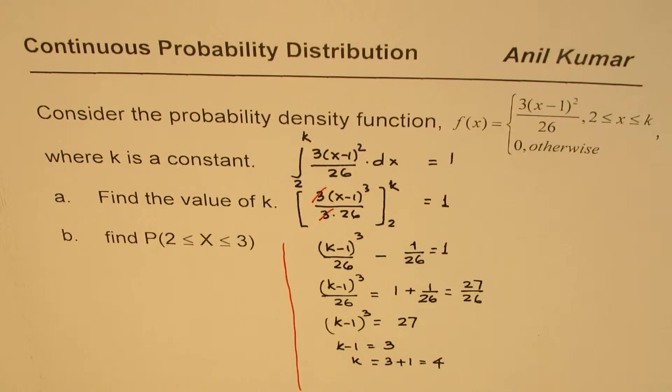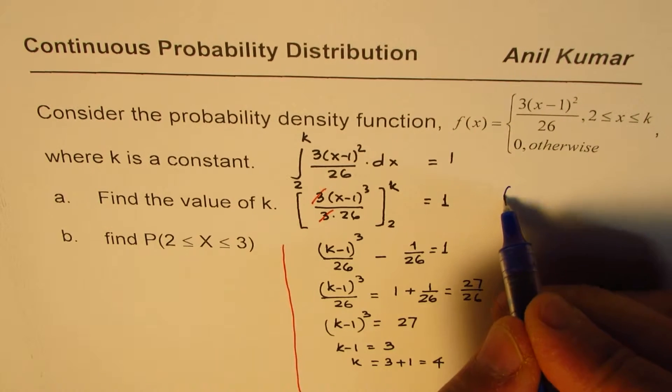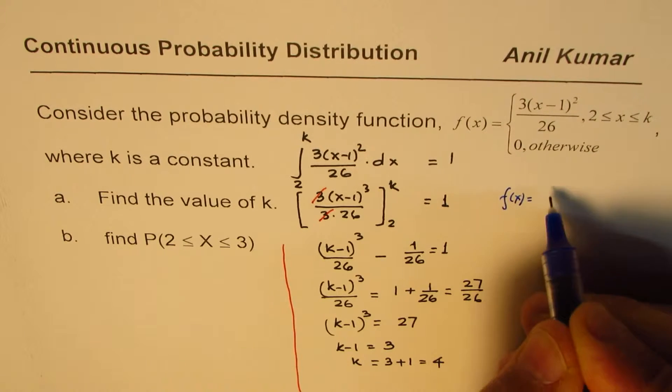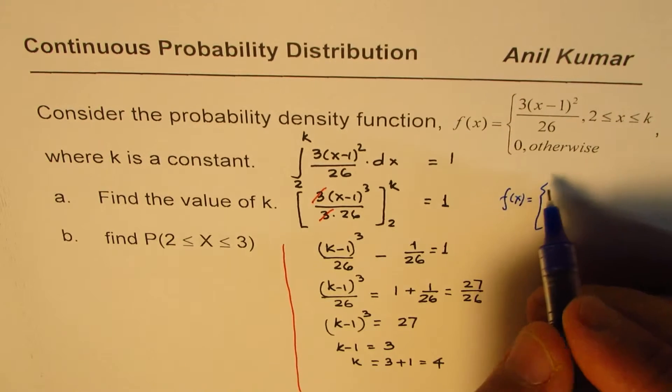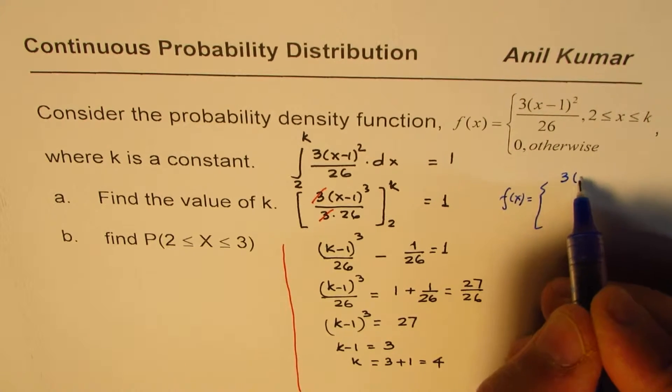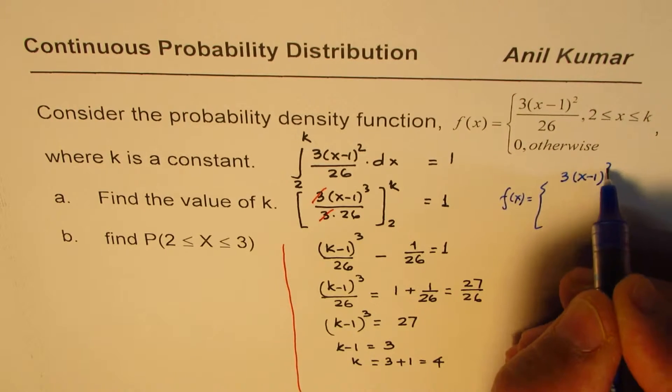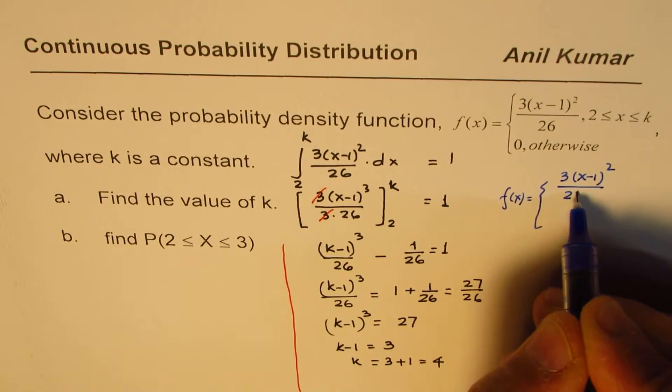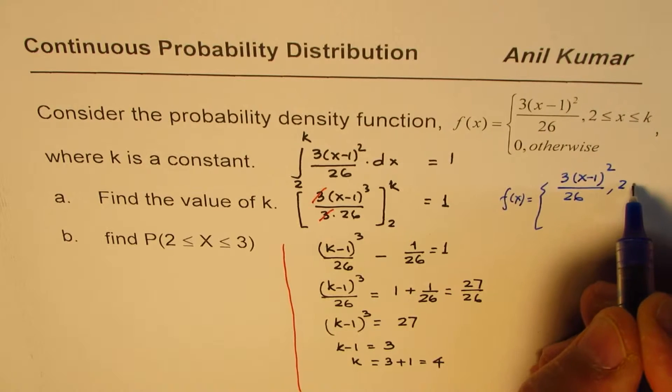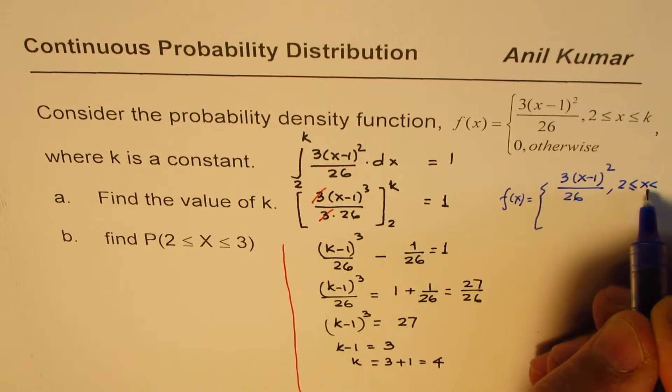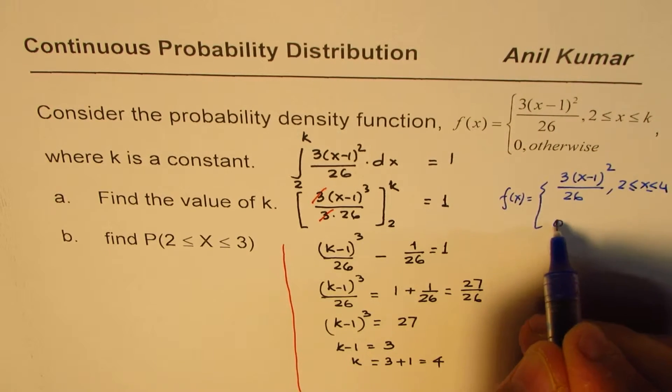So we can write our function, which is f(x) equals to 3(x-1)² over 26, when x is between 2 and 4, and 0 otherwise.